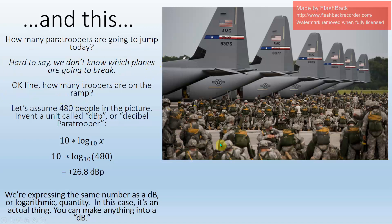How many paratroopers are on the ramp? So let's say we count all the helmets out there. And we get 480 people are standing out there in the picture. And so instead of passing number 480, I want to convert this to decibels. So I'm going to invent a unit called dBP or decibel paratrooper. Same equation applies. 10 times logarithm 10 of x. 10 times log 10 of 480. I spit this into a calculator and it spits out 26.8 dBp.